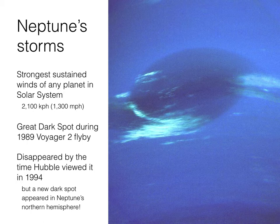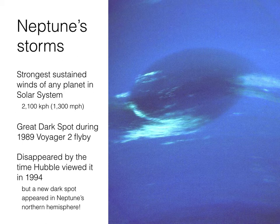However, unlike the Great Red Spot on Jupiter, the Great Dark Spot had disappeared by the time the Hubble Space Telescope got a look at it in 1994. So in just five years, the Great Dark Spot was gone. But there was a new dark spot that had formed in Neptune's northern hemisphere. So these are storms that come and they go, and sometimes they're pretty spectacular and sometimes not — it's not 100% clear as to why that's the case, but it is very interesting.